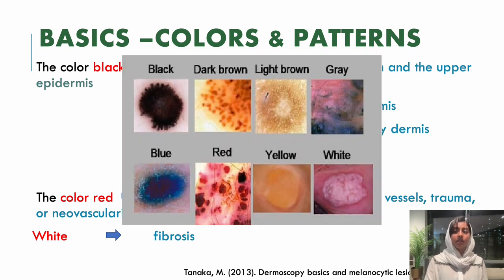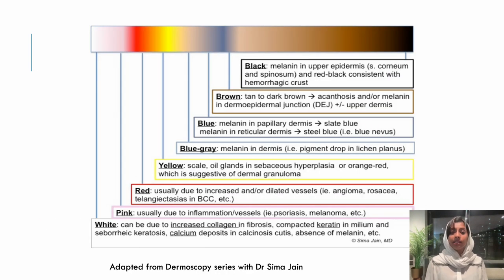So these are some of the colors you will see through the dermoscope: black, brown, light brown, gray, blue, red, yellow, and white. The color yellow mainly stands for oil in sebaceous hyperplasia, or it can be because of dermal granulomas. This is a nutshell of the different colors and what they indicate.